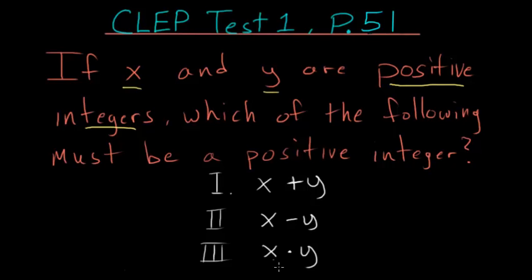Let's look at each one individually. We know x and y are both positive numbers. If you add two positive numbers, like 3 plus 4, then you will be left with a positive number. So we know that the first case must be a positive number.